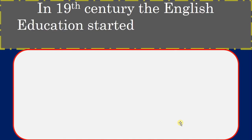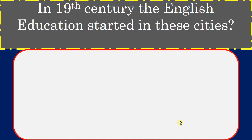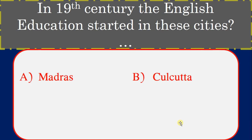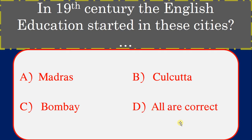In the 19th century, English education started in which cities? Options: Madras, Kolkata, Bombay, all are correct. Correct answer: All are correct.